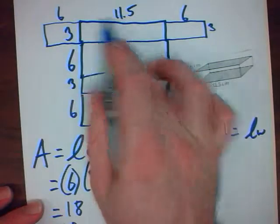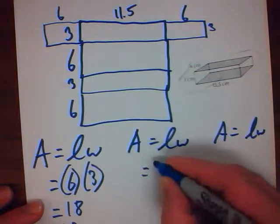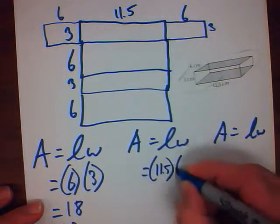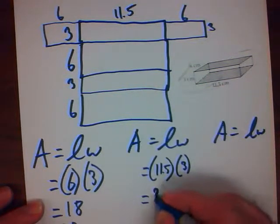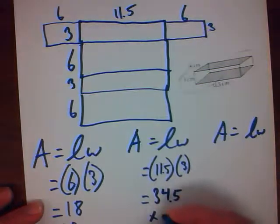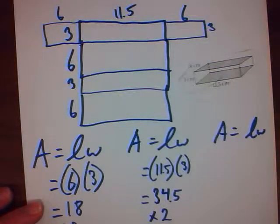Now I'm going to go to the one that's 3 by 11.5. Again, I have to times that by 2, because there are two of them.